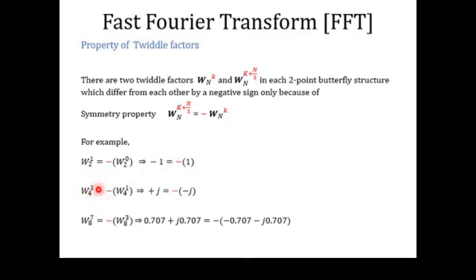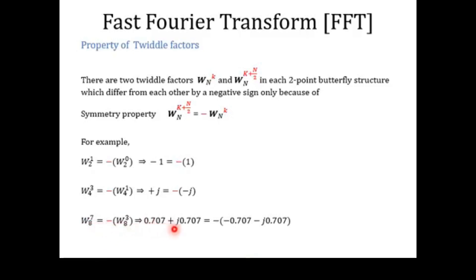At the four-point DFT stage, a single butterfly operation contains twiddle factors W₄³ and W₄¹. W₄³ equals +j and W₄¹ equals -j, so W₄³ is the negative of W₄¹. Similarly, at the eight-point DFT stage, a butterfly contains W₈³ and W₈⁷. W₈⁷ equals 0.707+j0.707 while W₈³ equals -0.707-j0.707, confirming that W₈⁷ is the negative of W₈³.